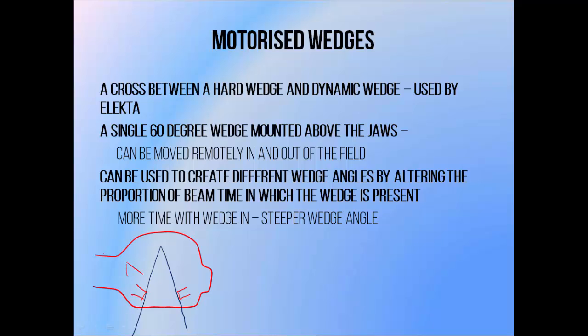Elekta uses a motorized wedge. It's a large-angle hard wedge that sits inside the linac treatment head just above the secondary collimator jaws. It can be moved remotely in and out of the beam at will. The actual physical wedge only has one angle — about 60 degrees, which is the largest you'd normally see in clinical practice. But this can be used to create different wedge angles by delivering part of the beam without the wedge in the beam, and part of the beam with the wedge in the beam.